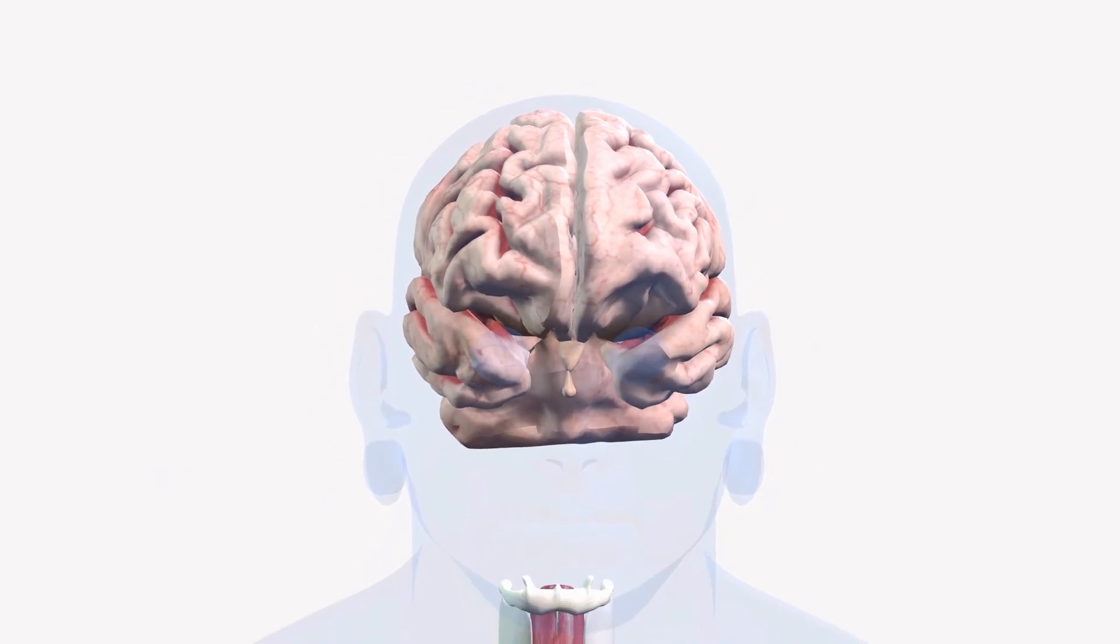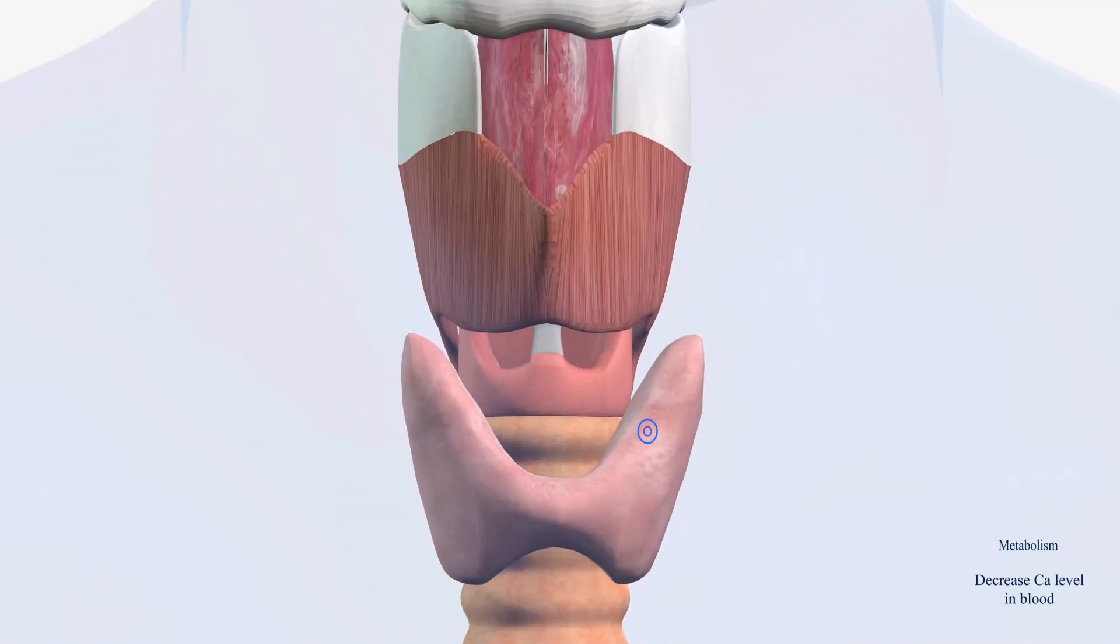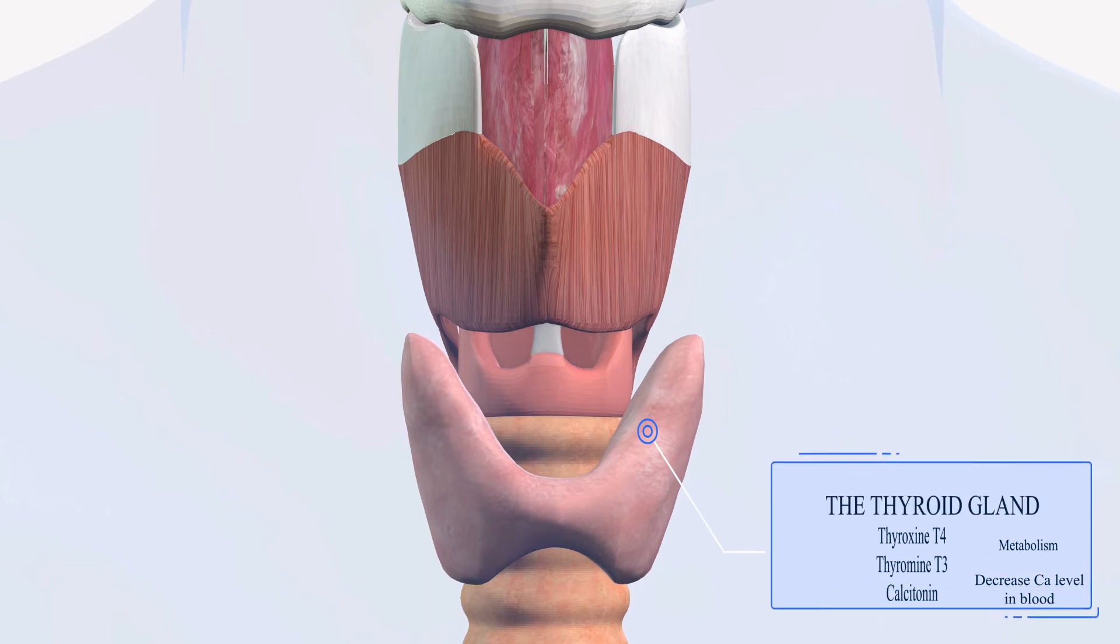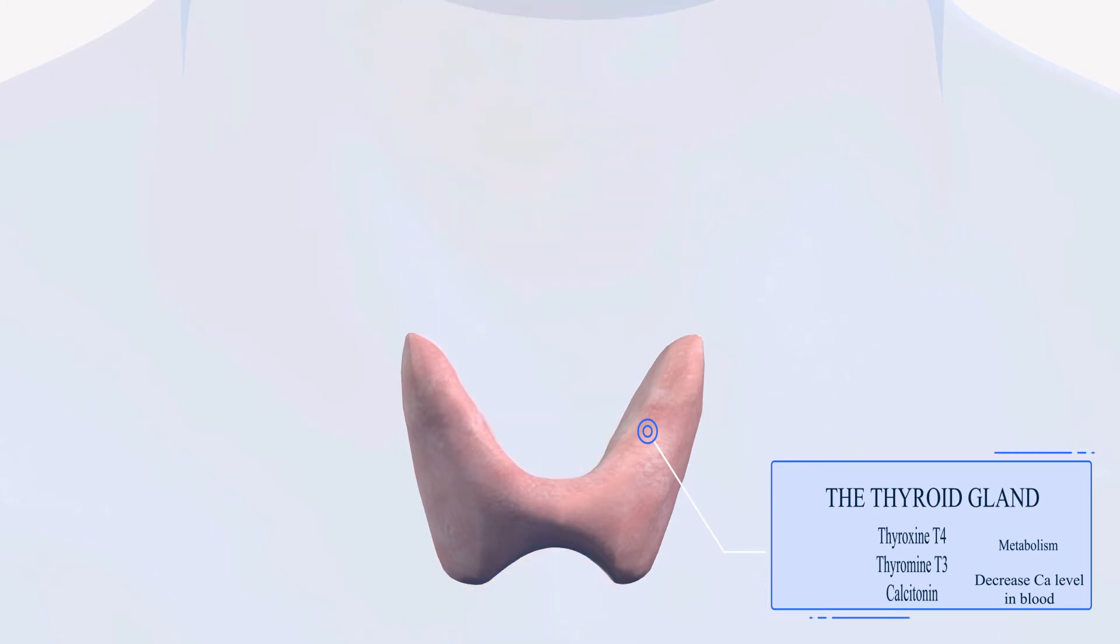Now let's make our way down to the trachea or throat area. We have wrapping around the trachea, here we have the thyroid gland. Now the thyroid gland secretes few hormones: thyroxine which is abbreviated T4 and triiodothyronine which is T3, that's responsible for metabolism essentially. It also secretes calcitonin hormone, which reduces calcium level in blood.